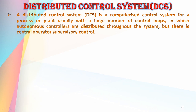A distributed control system, or DCS, is a computerized control system for a process or plant, usually with a large number of control loops, in which autonomous controllers are distributed throughout the system but there is central operator supervisory control.